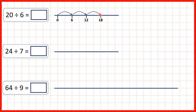So we need to stop at 3 jumps of 6, and that takes us to 18. From 18 to get to 20, we need 2 more — not 2 more jumps of 6, but just another 2. So our answer is 3 remainder 2, because we made 3 jumps of 6 but then needed 2 more to get to 20.